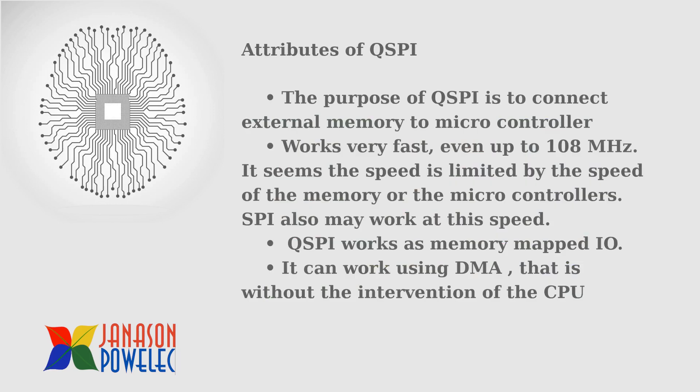Let us see the attributes of QSPI. The purpose of QSPI is to connect external memory to microcontrollers. This works very fast, even up to 108 MHz. The speed is limited by the speed of the memory or the microcontroller. SPI may also work at this speed, but it communicates through only two lines, whereas QSPI uses four lines, so it is much faster. It can also work using DMA, meaning it can work without the intervention of the CPU, so much faster data transfer can be achieved between the microcontroller memory area and external flash memory.